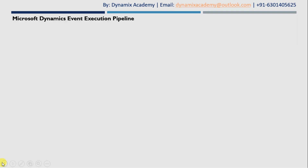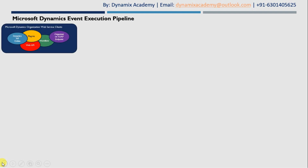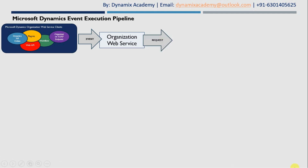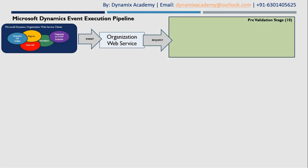Whenever you take an action on a Dynamics 365 client, it will subscribe to an event. That event will be handled by the organization web service, which will create an organization web service request object. That request object will then be passed to the pre-validation stage.